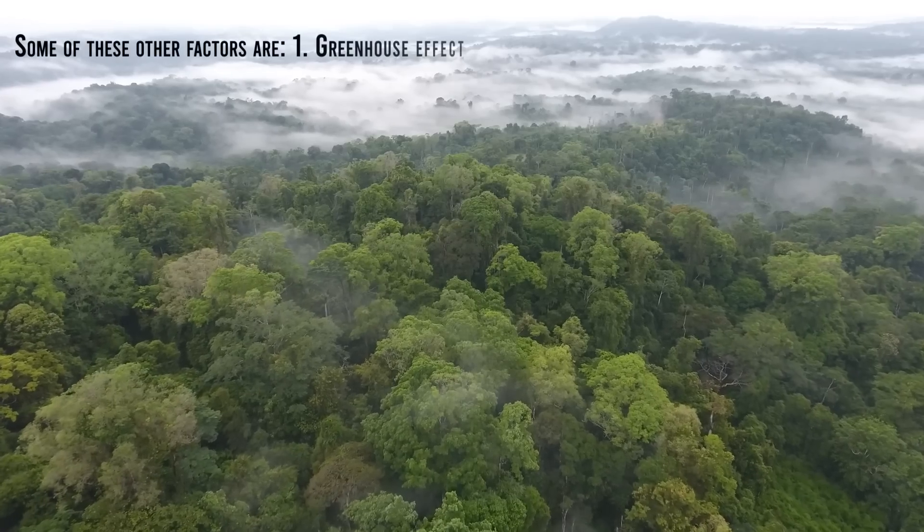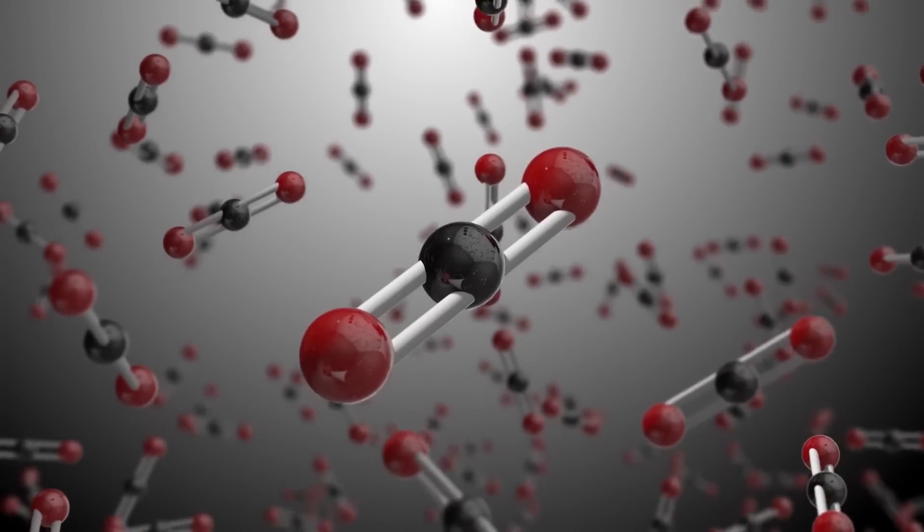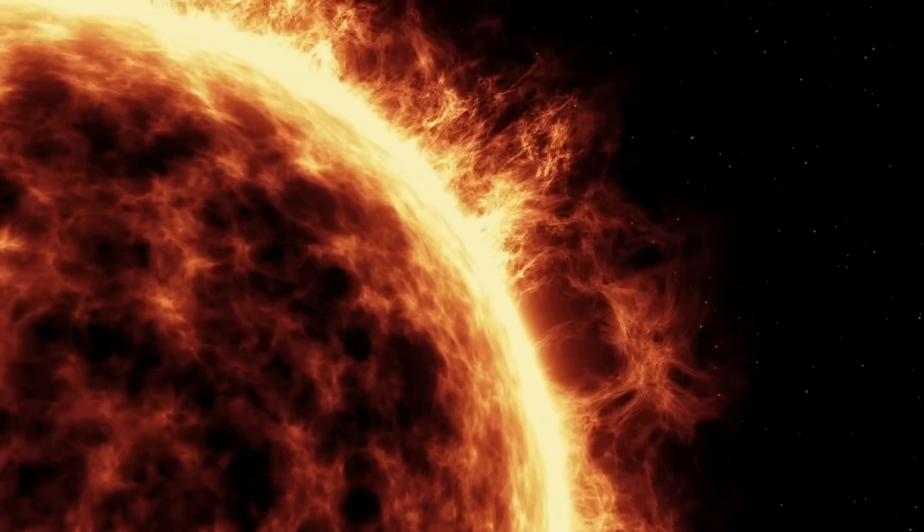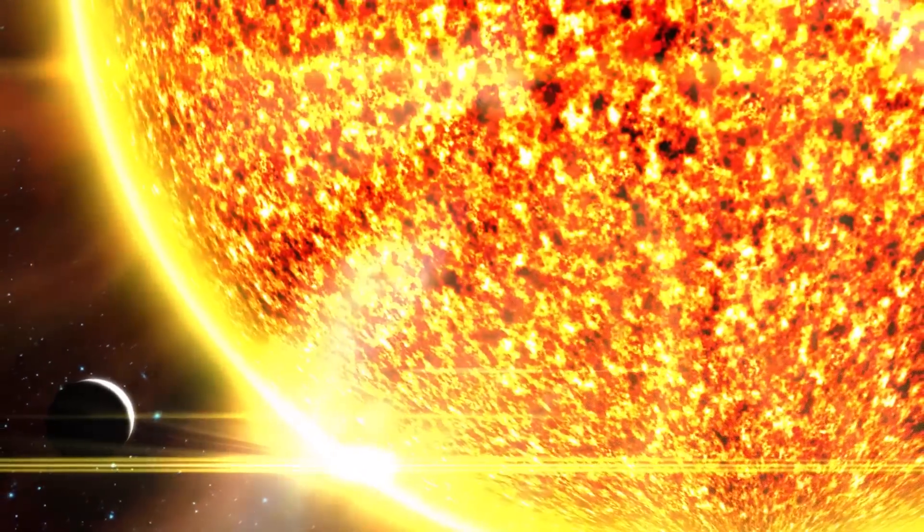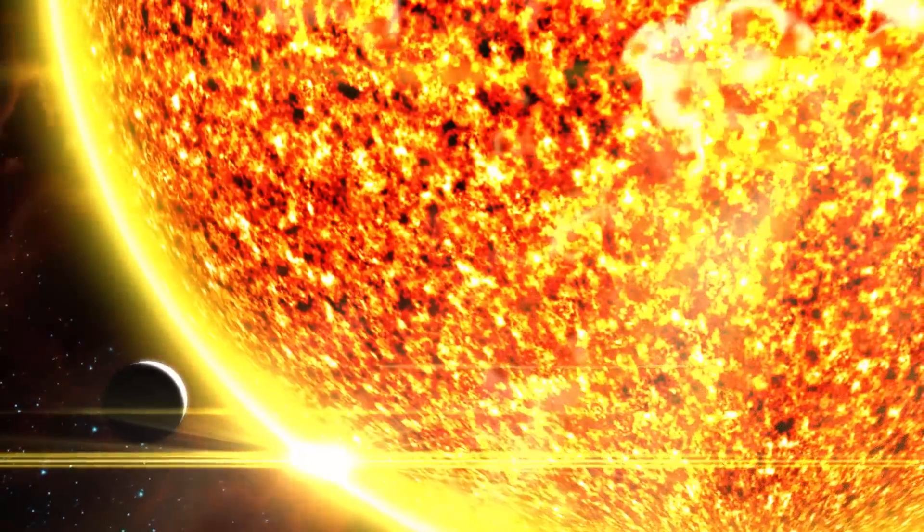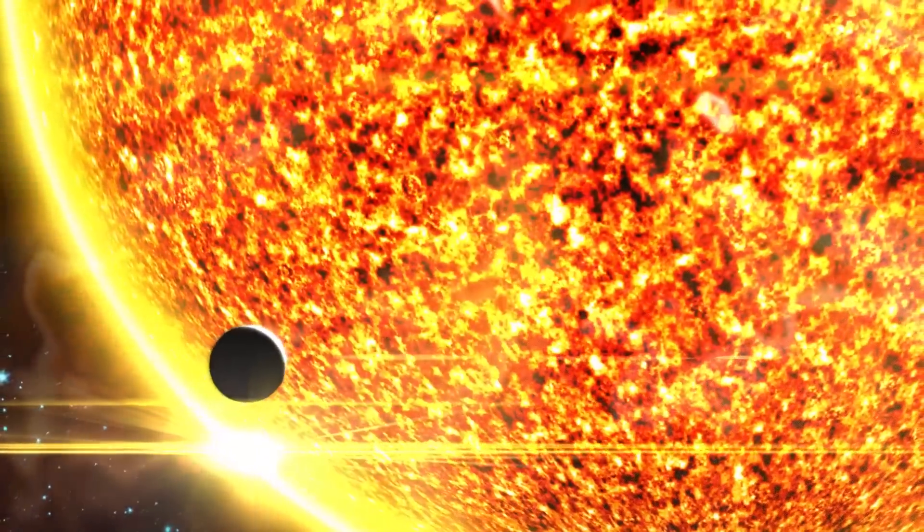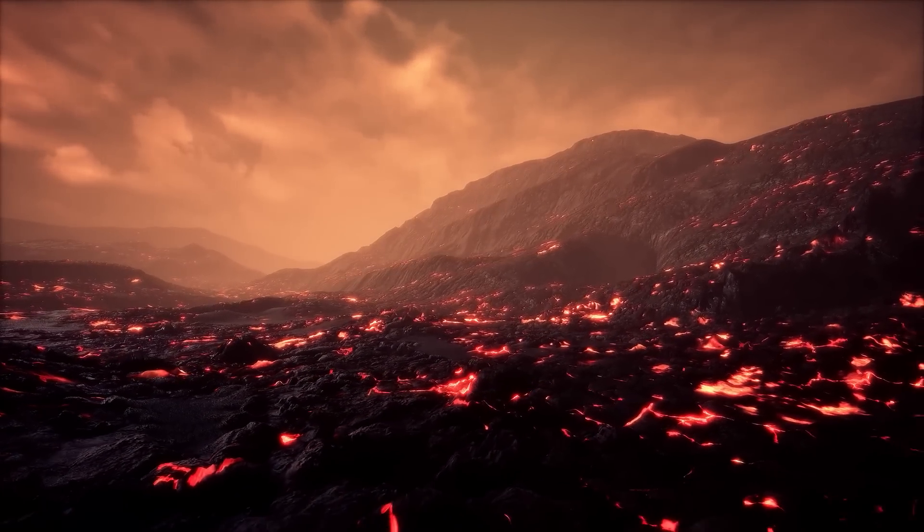Some of these other factors are greenhouse effect. Carbon dioxide in a planet's atmosphere generates the well-known greenhouse effect, due to which much of the radiation from the star cannot escape from the planet's surface. This makes the temperature of such a planet much higher than that obtained by calculating only the energy it receives from its star. It is this effect that prevents the presence of liquid water on Venus.